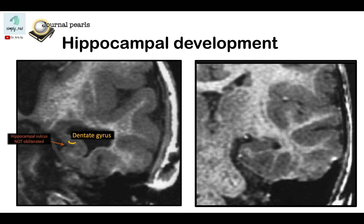Note also that because the hippocampus is partially unfolded, it is positioned too medially. Compare this with the normal case in which the hippocampus is more lateral compared to the medially placed subiculum.